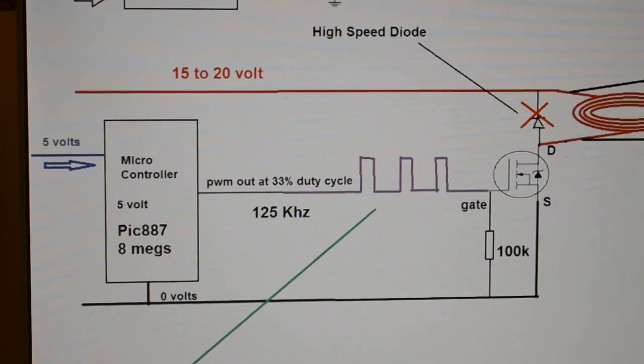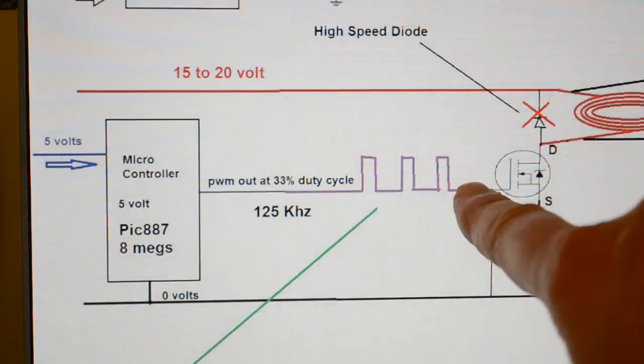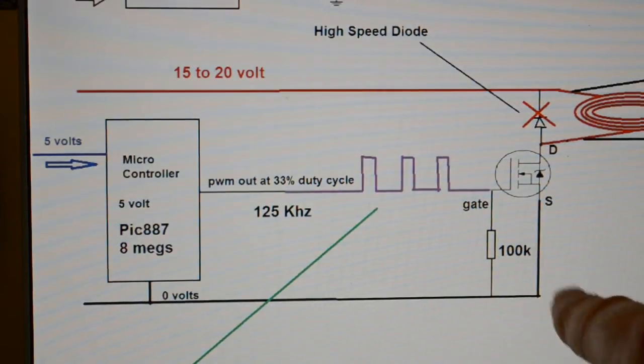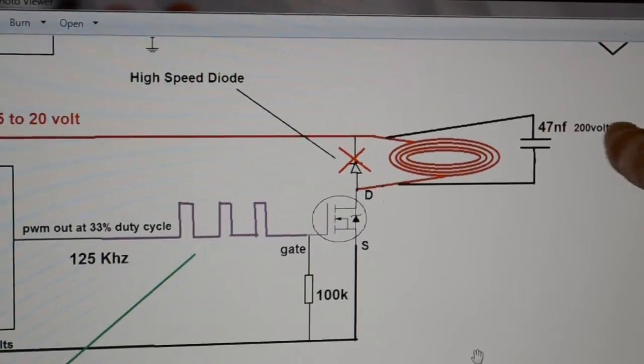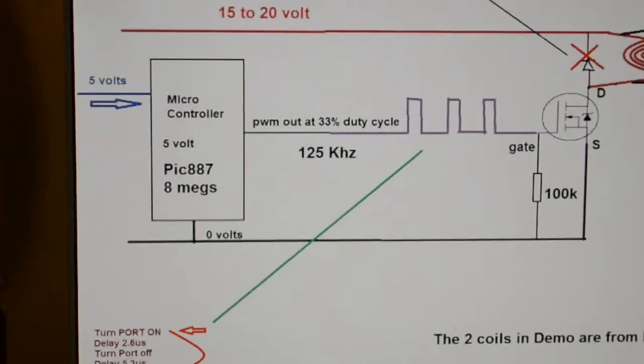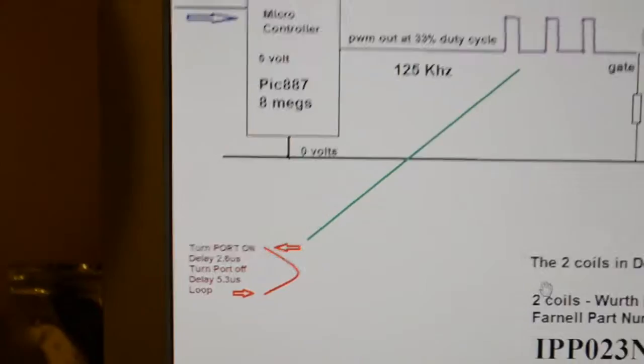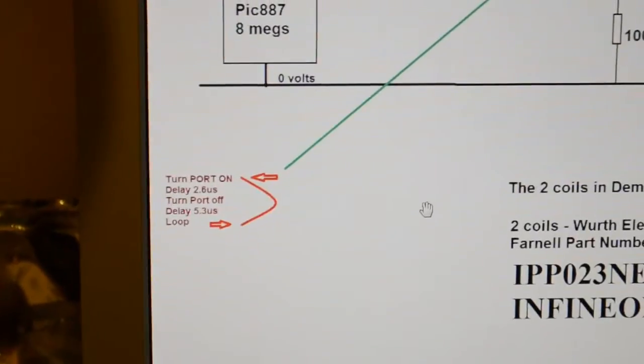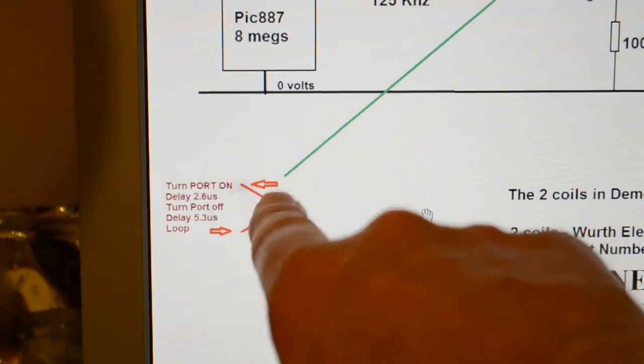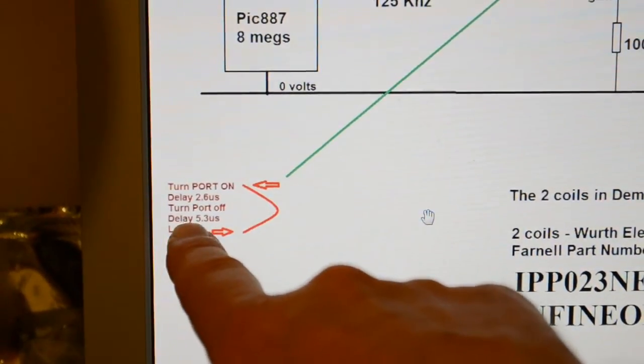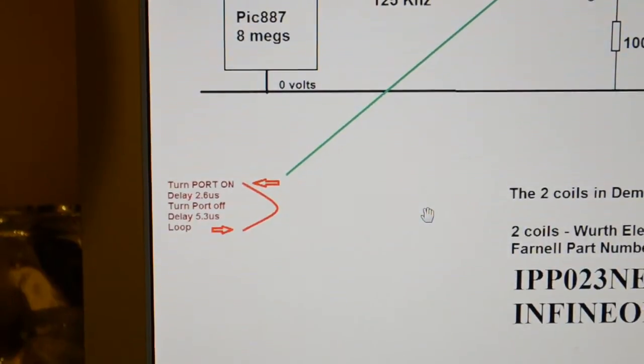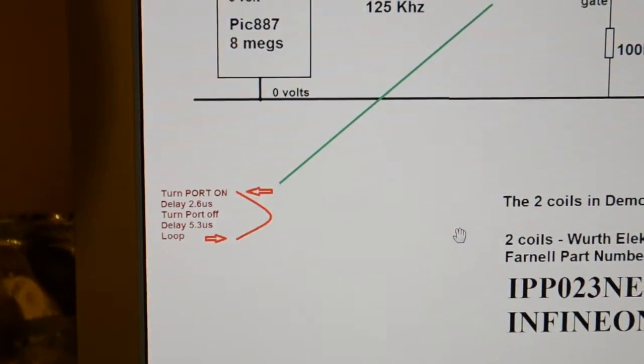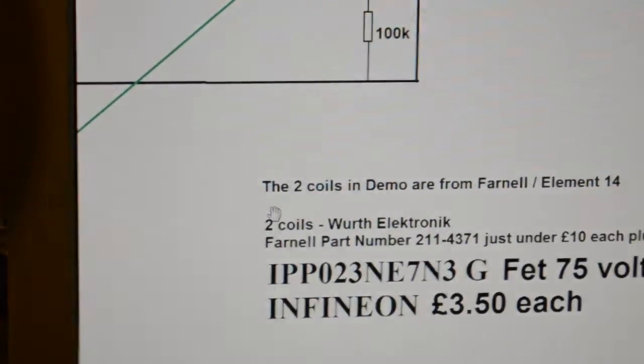Same as before: microcontroller PWM, 33% duty cycle, FET, 100k down across the gate. Take out that diode there, don't need that anymore. The Wurth coil and 47 nanofarad, 100-volt capacitor, 100-volt minimum. If you can't program PWM but you know how to turn the port on, I've got a little note down there: turn the port on, delay for 2.5 microseconds for the pulse width, turn the port off, delay for 5.3 microseconds and loop. That'll give you effectively 125 kilohertz at 33%.